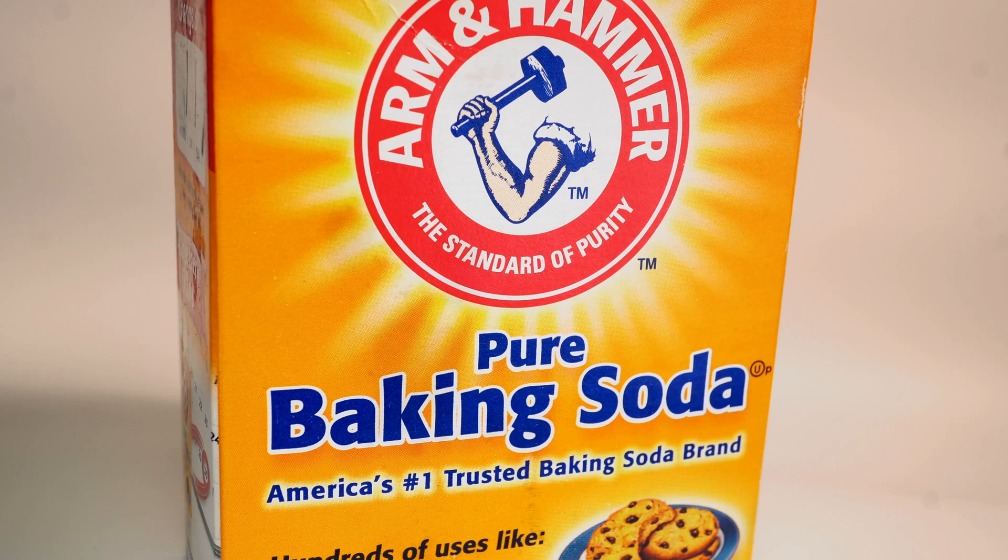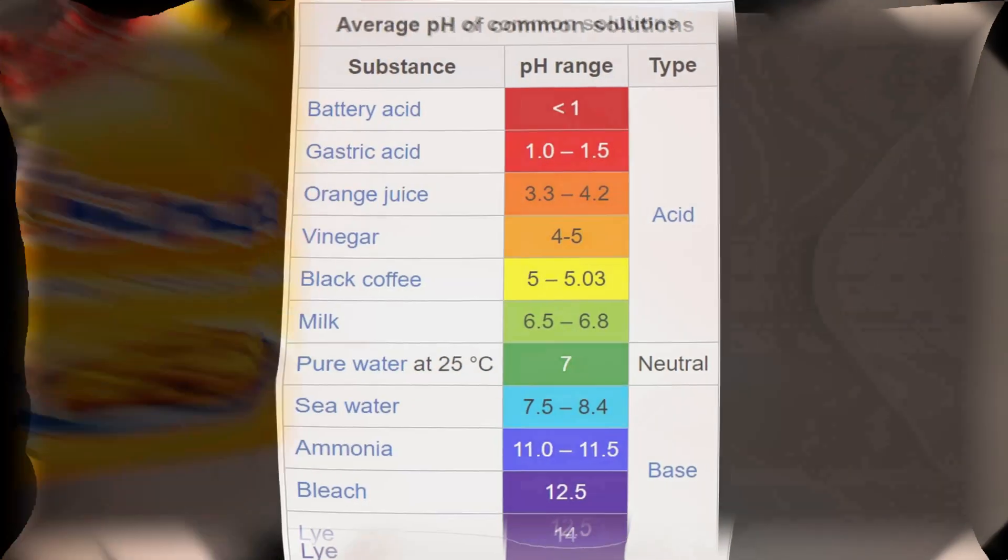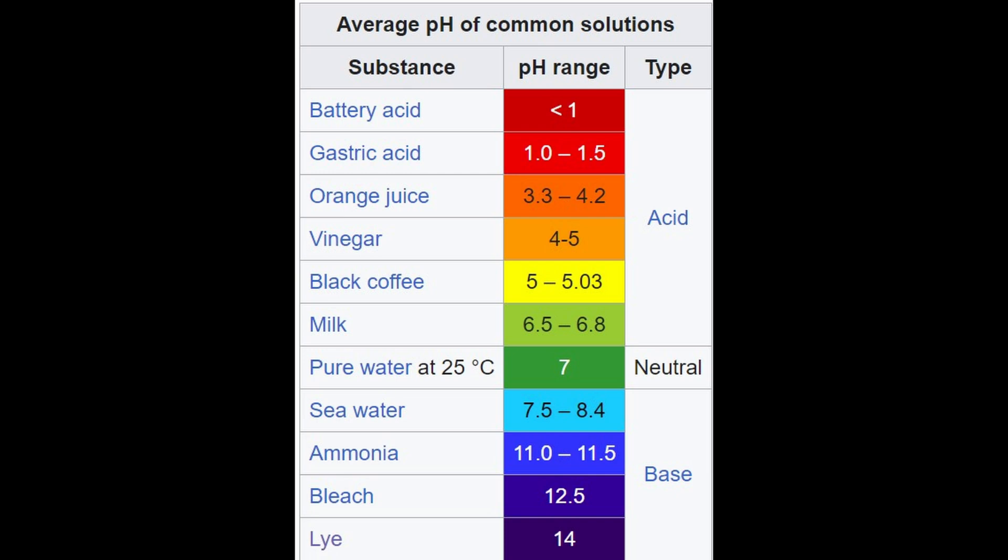Now what is a base? Well, base substances are substances that when dissolved in water have a pH level greater than 7, taste bitter, and feel slippery. Again, do not really test this by tasting. This is why we have pH tests in the first place.